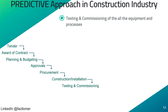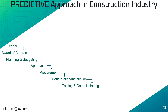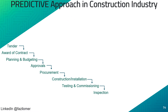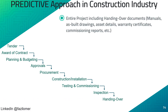After entire installations, testing and commissioning of equipment or processes will be carried out. Each of the activities carried out shall be inspected and approved by the client, in line with BOQ line items. These inspections and approvals will be done through material inspection requests and work inspection request forms. After all necessary inspection approvals and successful testing and commissioning, the project will be handed over to the client, including handing over documents such as manuals, as-built drawings, asset details, warranty certificates, testing and commissioning reports, etc.